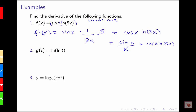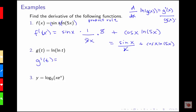For g of t equals log of log of t, this is a composition of functions where log of t is the inside function. Using the rule that the derivative of log of g of x is g prime of x over g of x, we get 1 over the inside function, which is log t, times the derivative of natural log t, which is 1 over t. So our overall derivative is 1 over t times natural log t.